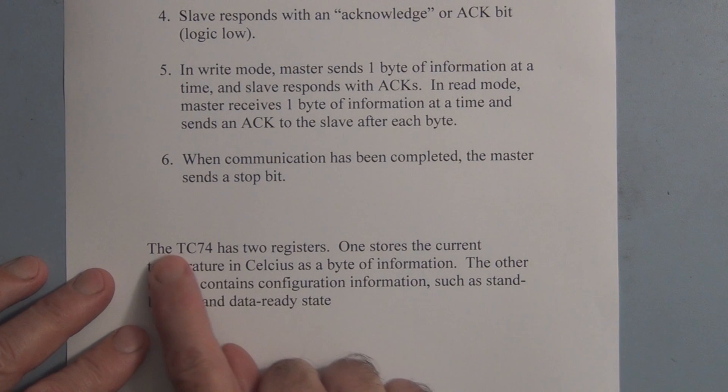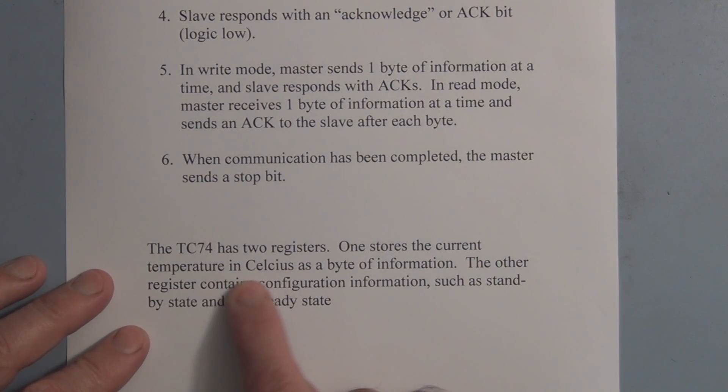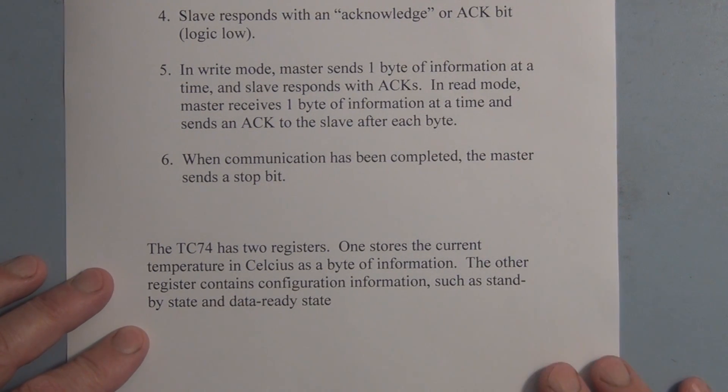That's summarized here. The TC74 has two registers. One stores current temperature in Celsius as a byte of information. The other register contains configuration information such as standby and data ready state.